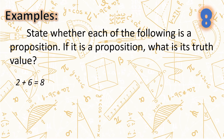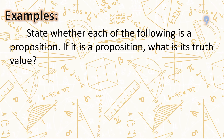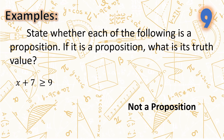Number eight: 'Two plus six equals eight.' A mathematical sentence — a declarative sentence — therefore this is a proposition and it is true. Number nine: 'x plus seven is greater than or equal to nine.' A declarative sentence, but this is not a proposition because the value of x is not assigned.